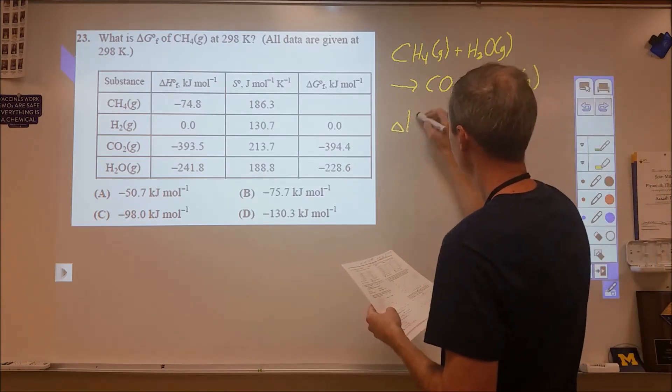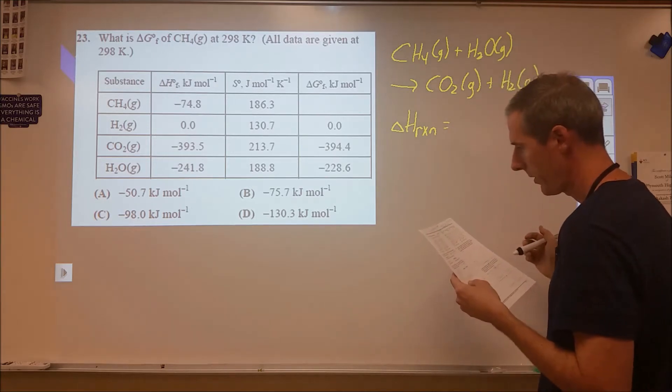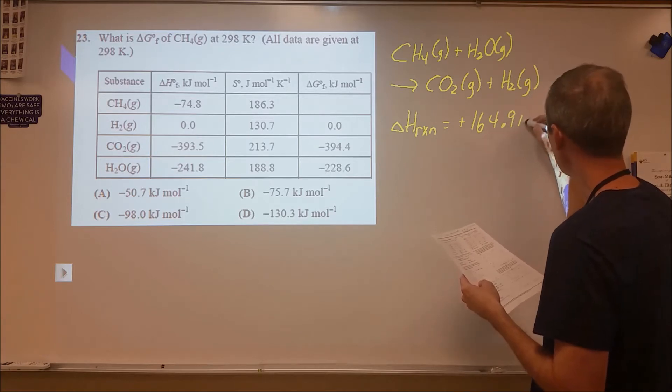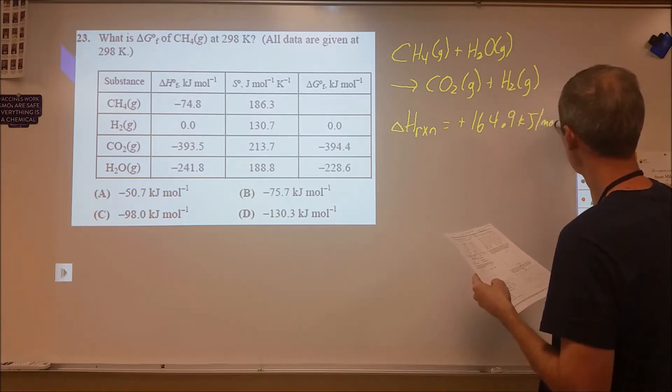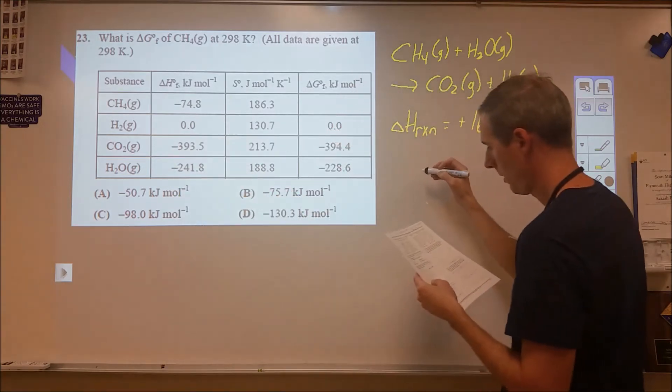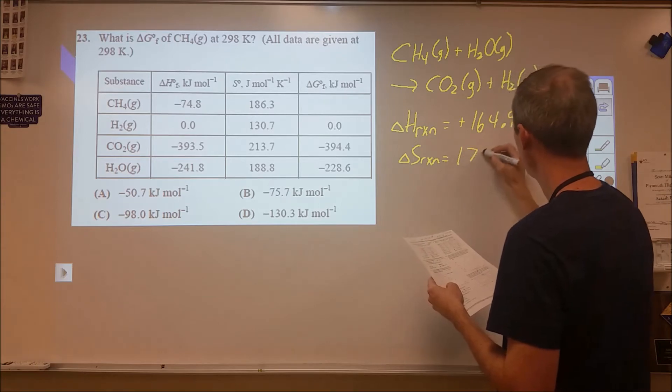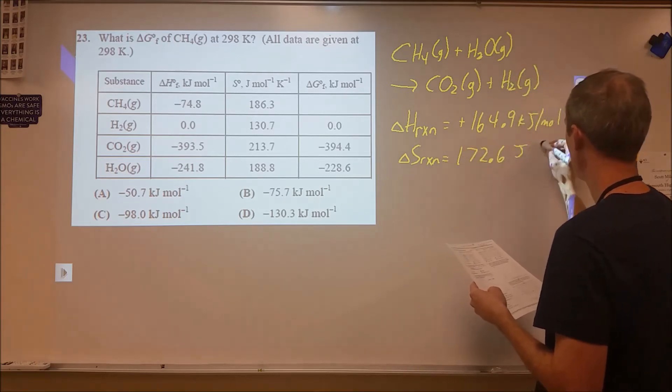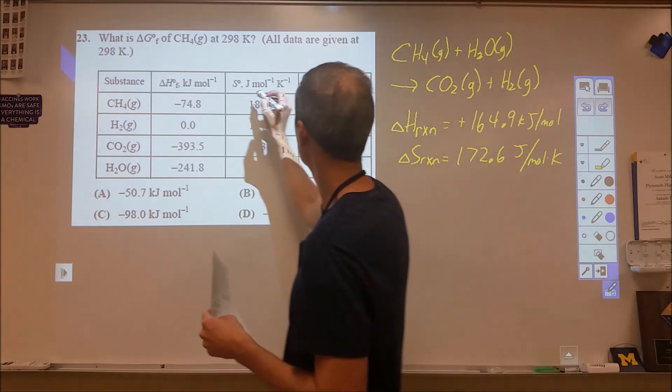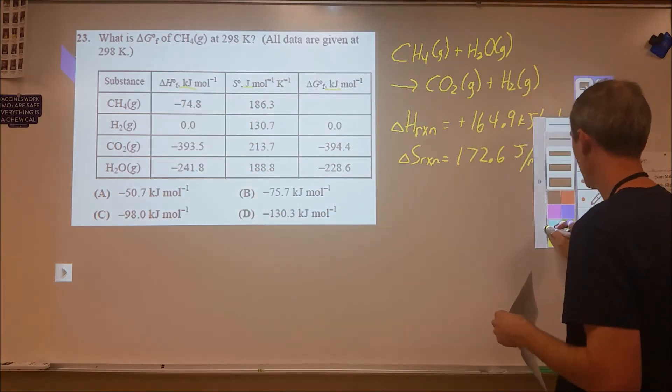So the enthalpy of the reaction ends up calculating to be 164.9 kilojoules per mole. We get that by doing the products minus reactants here. And then the entropy of the entire reaction is 172.6. However, that's in joules per mole kelvin. So no kilojoules—joules and kilojoules. We're going to need to adjust that in our calculation.